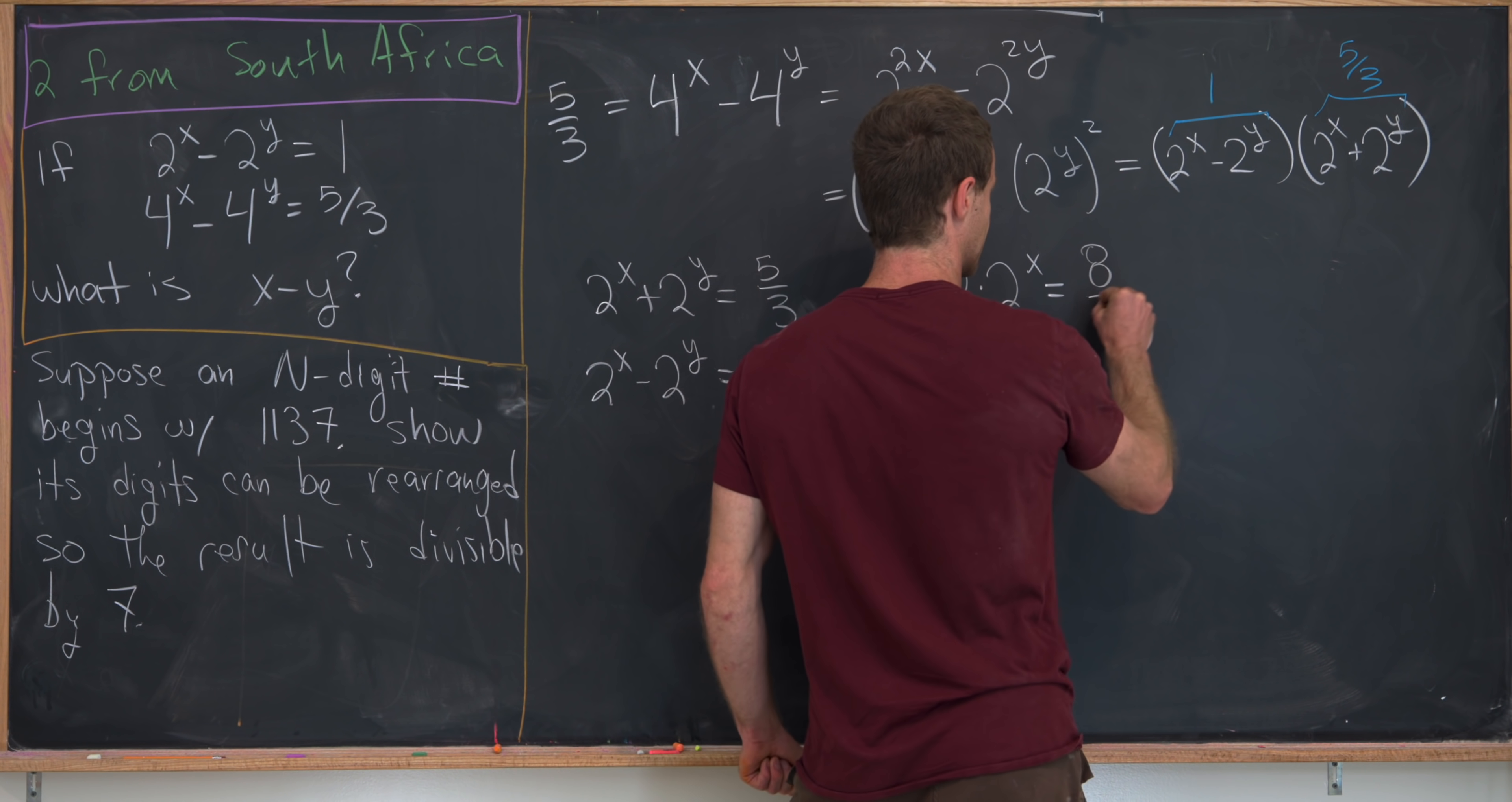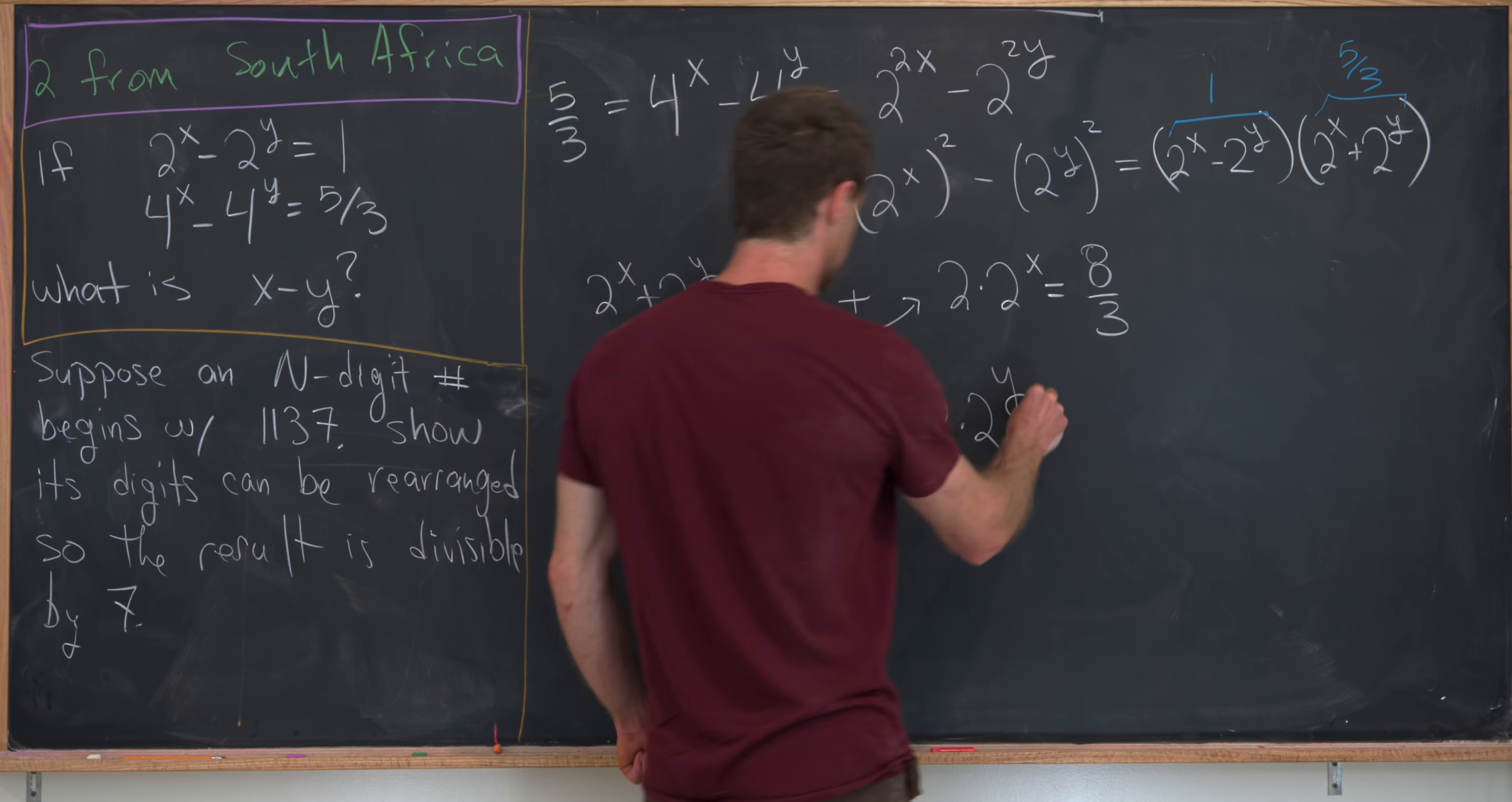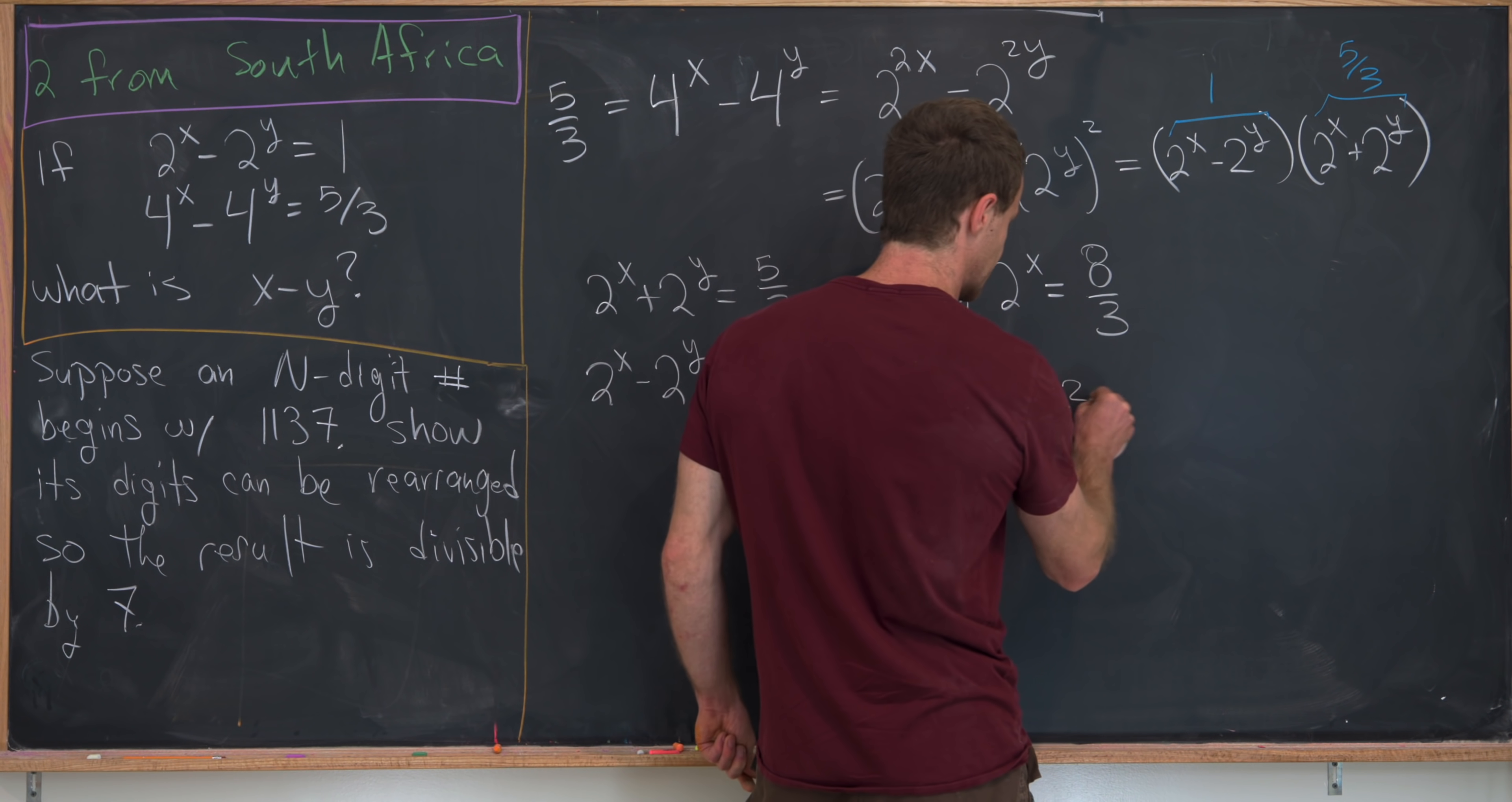And then we could subtract these two equations to see that we get 2 times 2 to the y from this bit right here. Notice that 2 to the x cancels here. It's 5 thirds minus 3 thirds, so that is just 2 thirds.